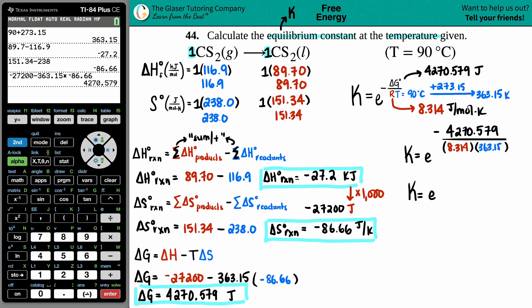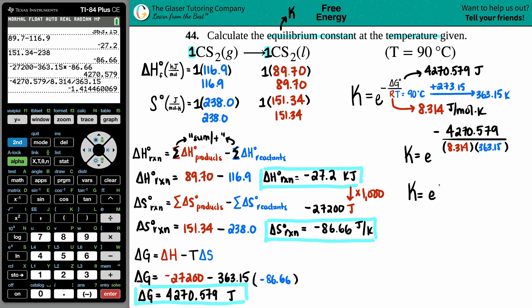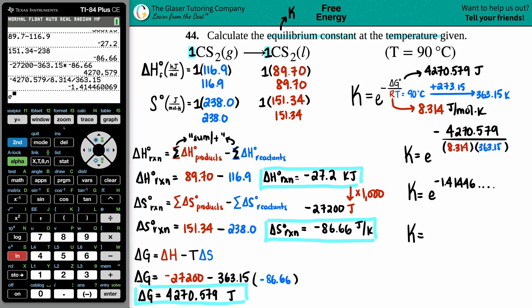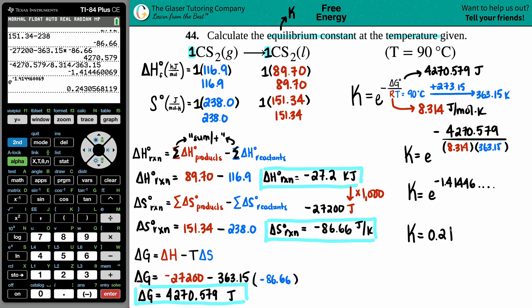So K equals e raised to the - I'm going to say negative, grab the whole delta G value divided by 8.314, and since I'm not using parentheses and I still want to tell the calculator that I want that 363 in the denominator, I'm going to press divided by 363.15. Lots of decimals, so no rounding: negative 1.41446. Now just raise the e button to it. K equals e is second ln, that's the e button. Grab the whole number, press enter, and there you go.